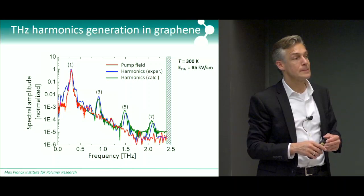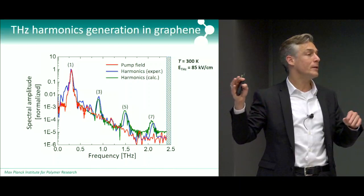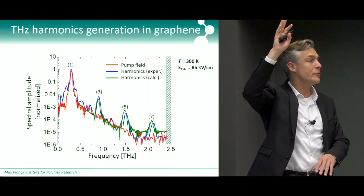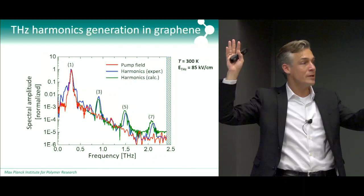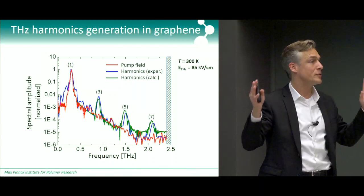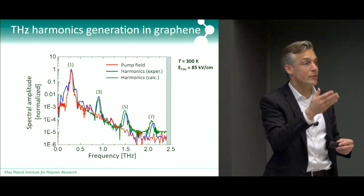Q: What happens in the valence band — what about the holes? A: Everything I said is completely symmetric for holes and electrons. We have no way of distinguishing between the two. I only talked about electrons, but you can replace the word 'electron' with 'hole' throughout the presentation and it is, as far as we can tell, completely symmetric.